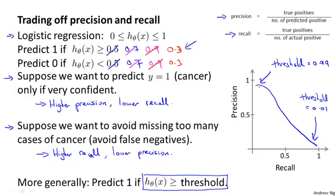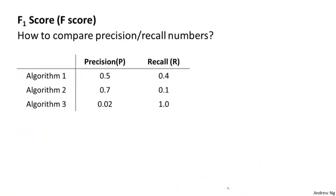The precision-recall curve can look like many different shapes — sometimes like this, sometimes like that — depending on the details of the classifier. This raises an interesting question: is there a way to choose this threshold automatically? Or more generally, if we have a few different algorithms or ideas for algorithms, how do we compare different precision-recall numbers?